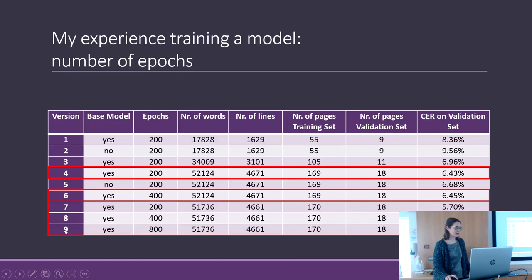Version 9 had 800 epochs — but the character error rate was worse, not better. So trying to increase the number of epochs significantly just took more server time without improving the model.